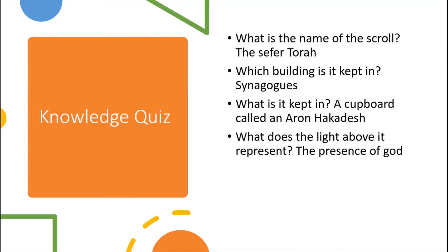The name of the scroll is the Sefer Torah. It's kept in a synagogue, in a cupboard called an Aron Hakodesh. The light above it represents the presence of God. I hope you found today really interesting learning about the Torah — I'd love to see all of your work uploaded onto Seesaw. Take care everyone and enjoy the rest of your lessons, bye bye.